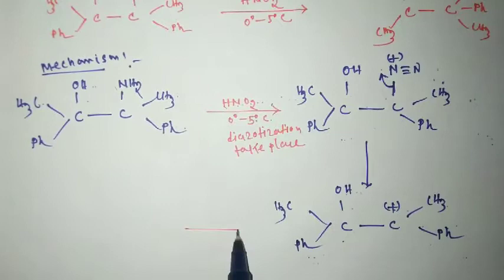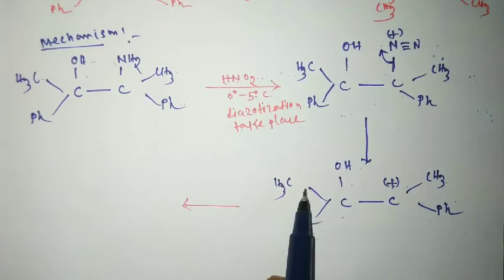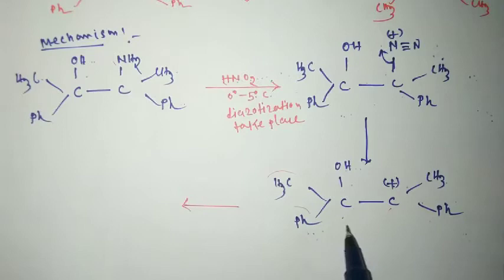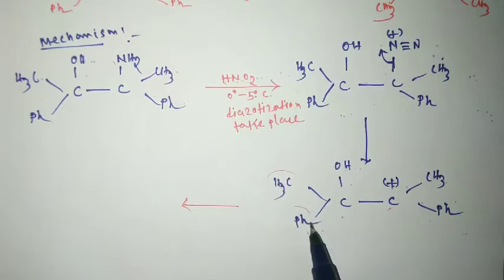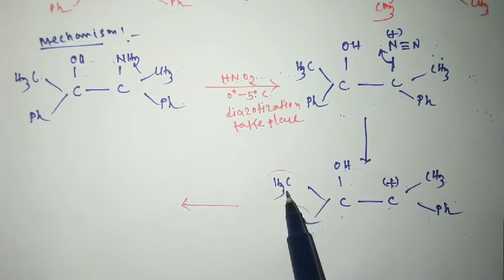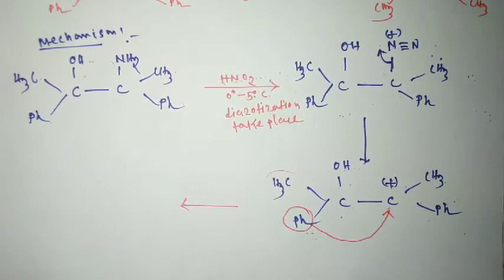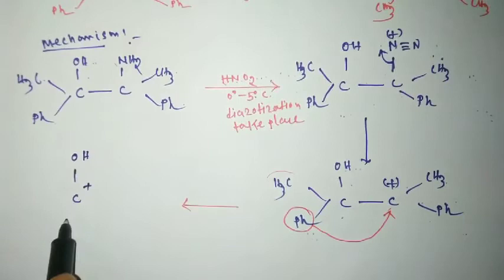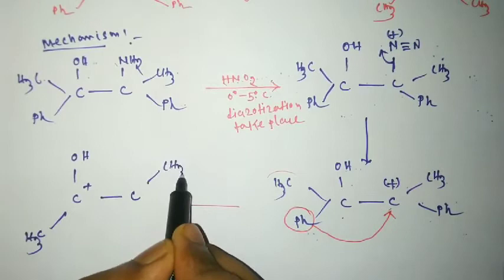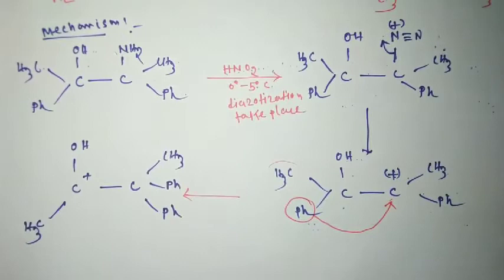In the next step, there are two possibilities: either the CH3 group migrates or the Ph group migrates. We know that the migratory aptitude of Ph is greater than CH3, so here the Ph group migrates from the carbocation, like this.